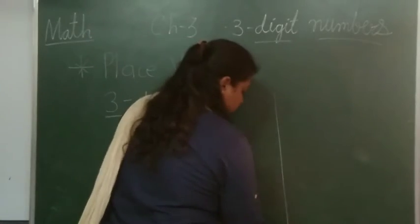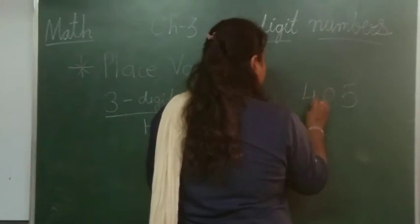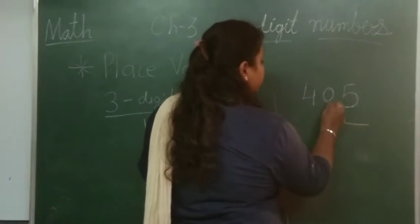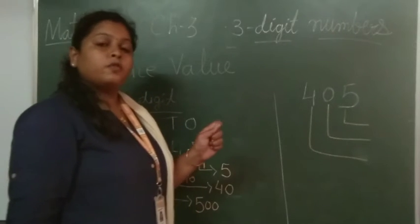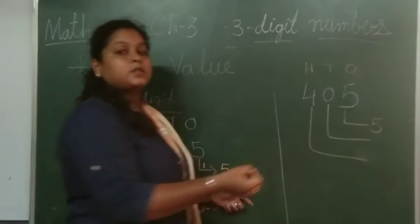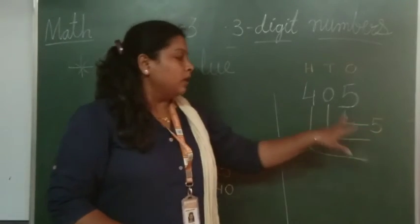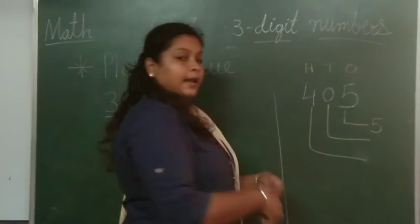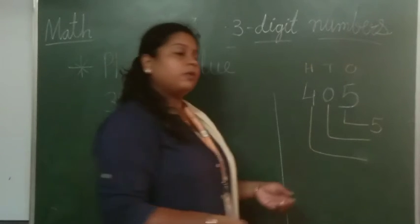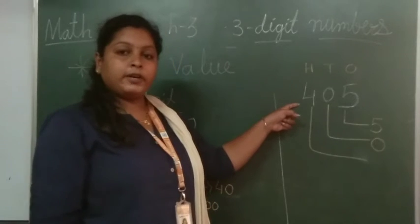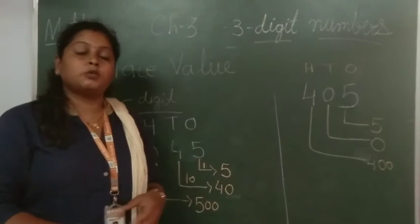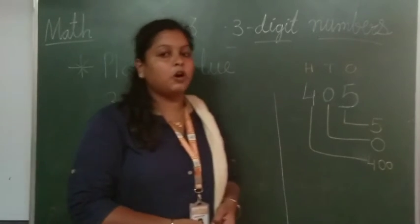For example, 405. We have to write the place value of each digit. In the ones place, 5 is there, so its place value will be 5 — whatever number is on the ones place, its place value remains the same. In the tens place, 0 is there, so the place value will be 0. In the hundreds place, 4 is there, so its place value will be 400. This is how you solve place value questions.